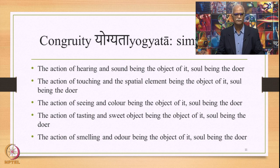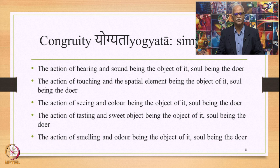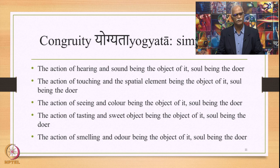The action of tasting with a sweet object as the object, soul as the doer, and tongue as the sense organ — they all are said to possess Yogyata or congruity. Similarly, the action of smelling with odour as the object, soul as the doer, and nose as the sense organ — they all are said to be congruous and to possess Yogyata.